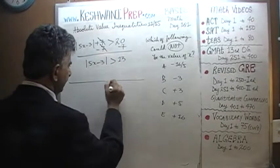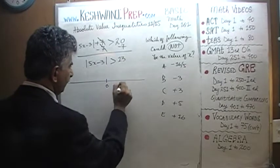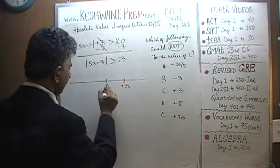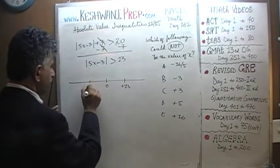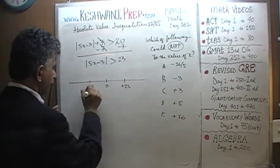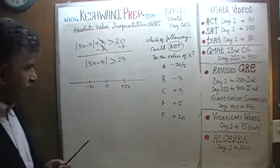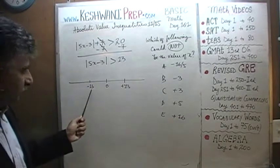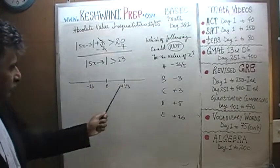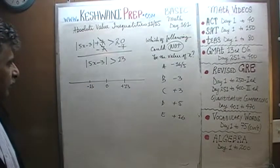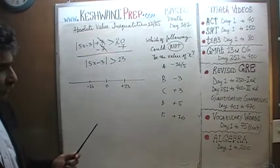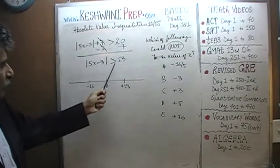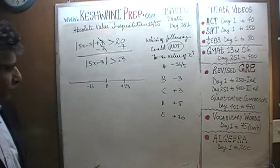So let's look at the number line. Here is our 0, here is positive 13, and here is negative 13. Somewhere here is what we are working with. These are the demarcation points — negative 13 and positive 13. The question is where are we going to fall? The absolute value has to be more than 13.